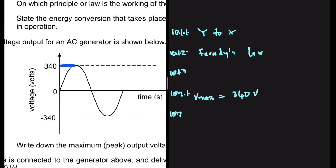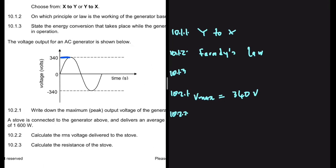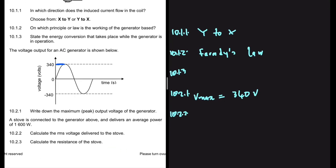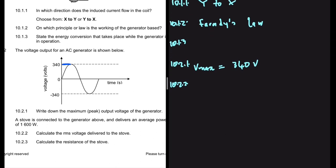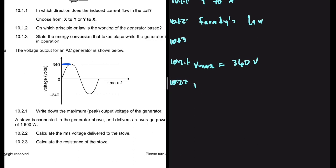10.2.2: A stove is connected to the generator above and delivers an average power of 1600 watts. Let's write that down. We have a power of 1600 watts. Calculate the RMS voltage delivered to the stove. So V_rms is equal to V_max divided by square root of two.